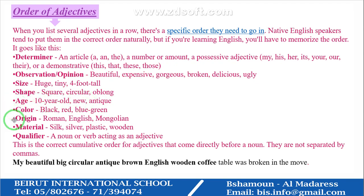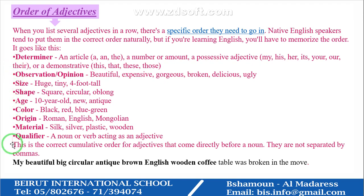Then the color, then the origin — where it's made, such as Roman, English, Mongolian, Lebanese, Arabic, French. Then the material used to make the object, like silk, silver, plastic, wooden. And finally the qualifier, which is a noun or verb acting as an adjective. This is the correct cumulative order for adjectives that come directly before a noun — they are not separated by commas.